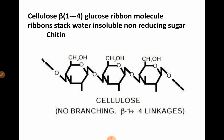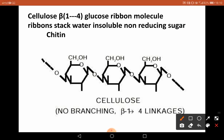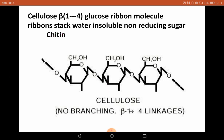This is the structure of cellulose, which is another homopolysaccharide, interconnected by beta-1,4 linkages. Cellulose is a beta-1,4 glucose ribbon molecule — it forms ribbon-like stacks and is insoluble and non-reducing. Here we have the monomers of glucose connected by beta-1,4 glycosidic linkages.